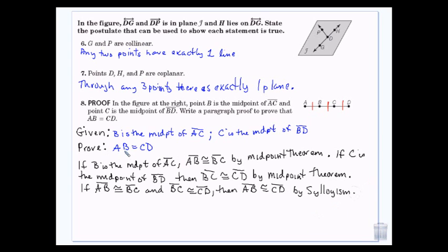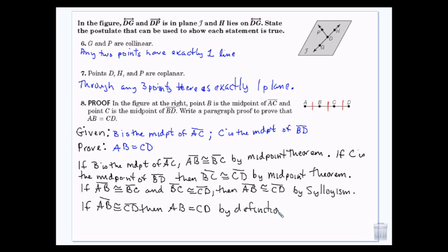Now I have them congruent, but I want to prove that they're equal. So I can say if they're congruent, then they are equal by the definition of congruent. And then you always end by restating the thing you were trying to prove.